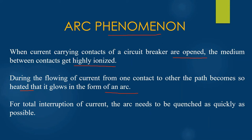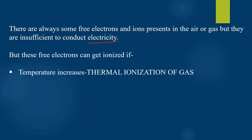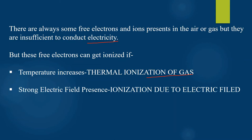For the total interruption of the current, it is mandatory that this arc so developed needs to be quenched as quickly as possible. We know that there are always some free electrons and ions present in air or gas, but they are insufficient to conduct electricity. They can conduct electricity only if the temperature increases — this is called thermal ionization of the gas. This temperature increases because the current density increases as a result of the contact area being decreased when the two contacts are separated. Also, the free electrons are able to conduct electricity in the presence of a strong electric field, which is known as ionization due to electrical field.